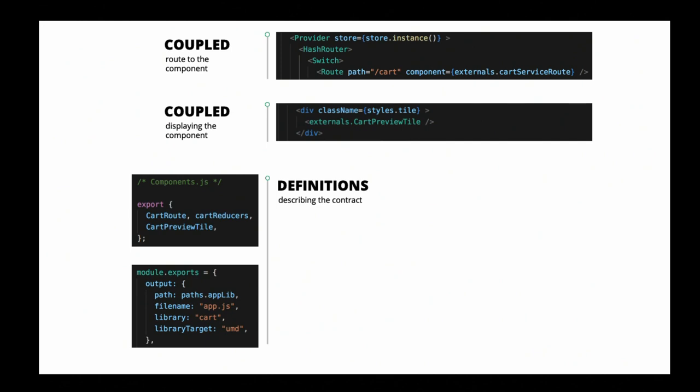The service that responds to the config API is often configured itself through environment variables — when you deploy, you set where to find the other things. To summarize: there is some coupling here, but the coupling is one-off. I add this once when I introduce a new component. The important thing — where to load stuff from — is decoupled, and how to load something is completely generic. And that is basically all I wanted to say. I'm happy to answer some questions.